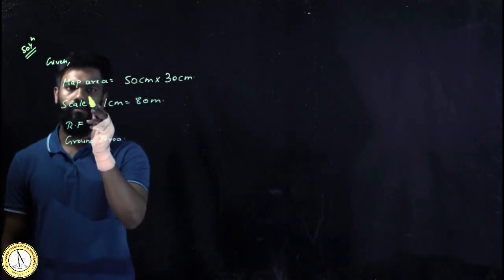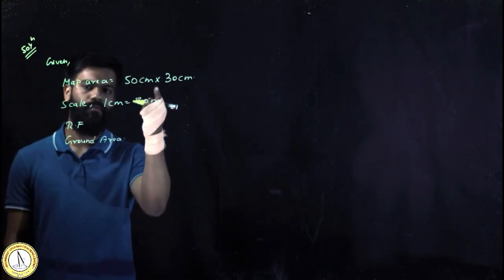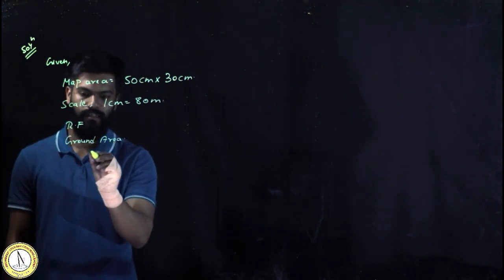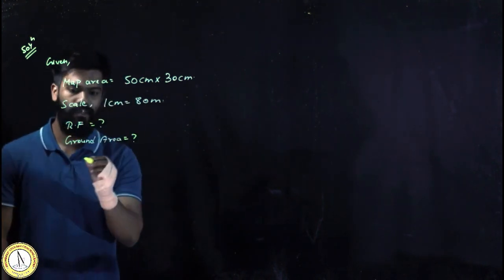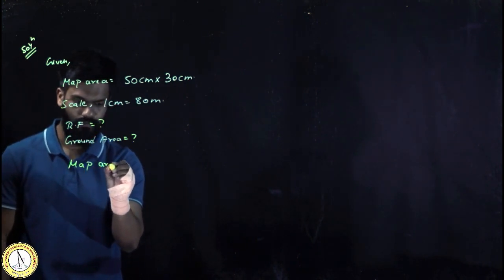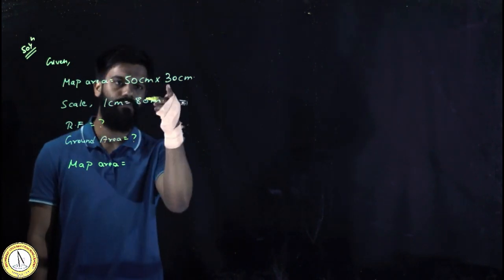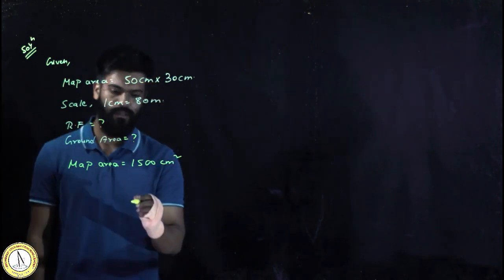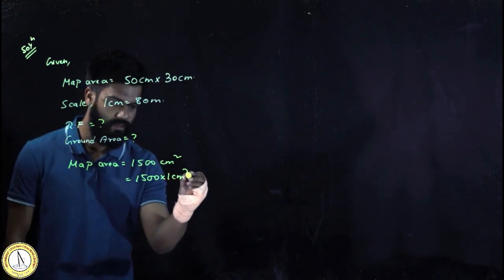First of all, I will find out the ground area from this map area. For that, first I will go for the map area. Map area can be written as multiplying these two: 5 times 3 equals 1500 centimeters squared. I can write this as 1500 into 1 centimeter squared.